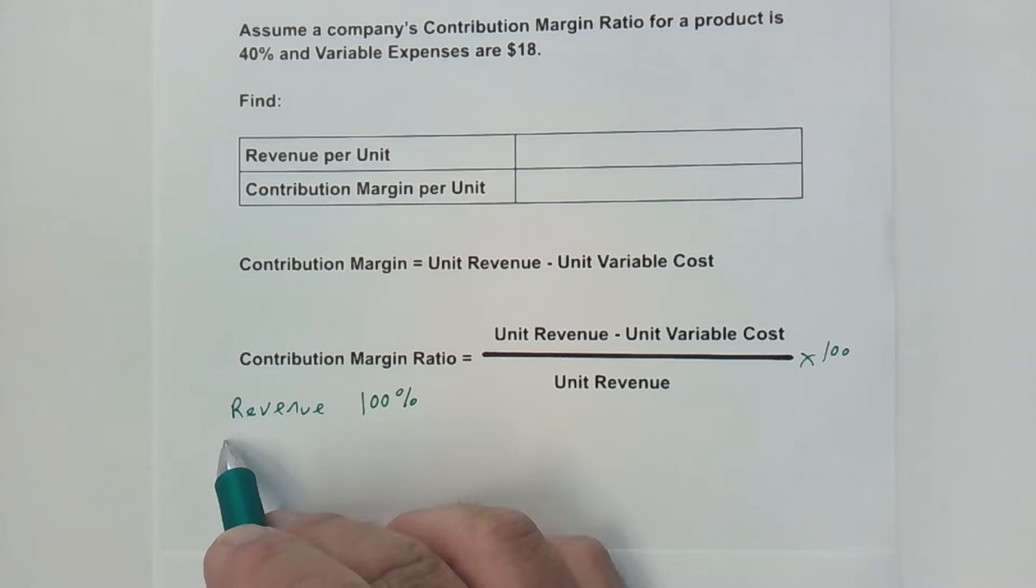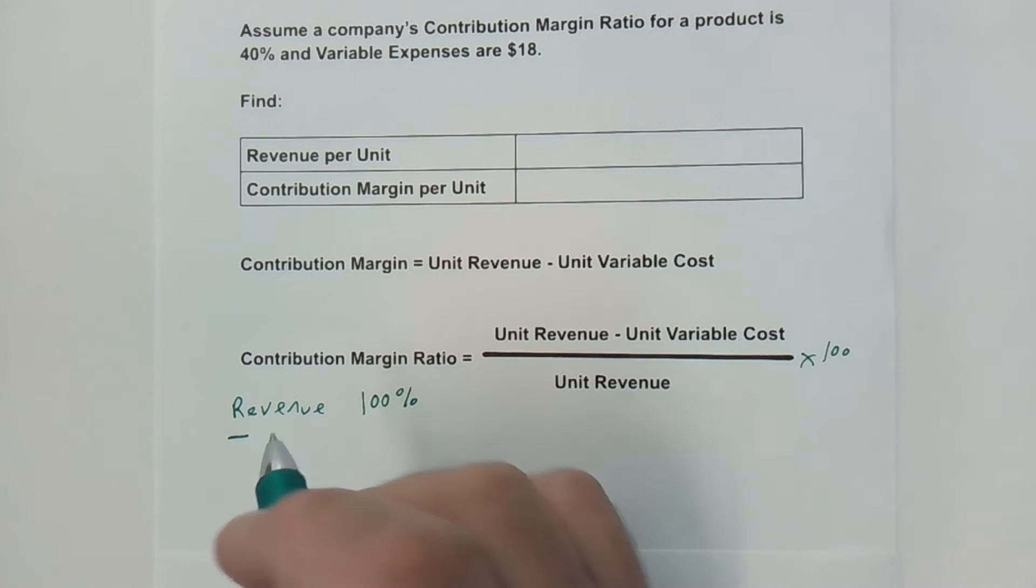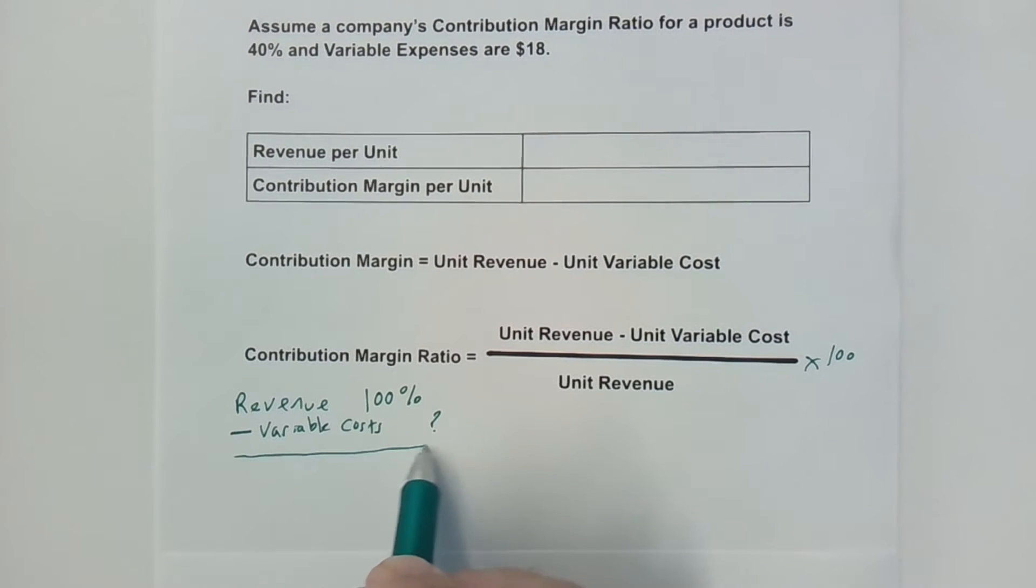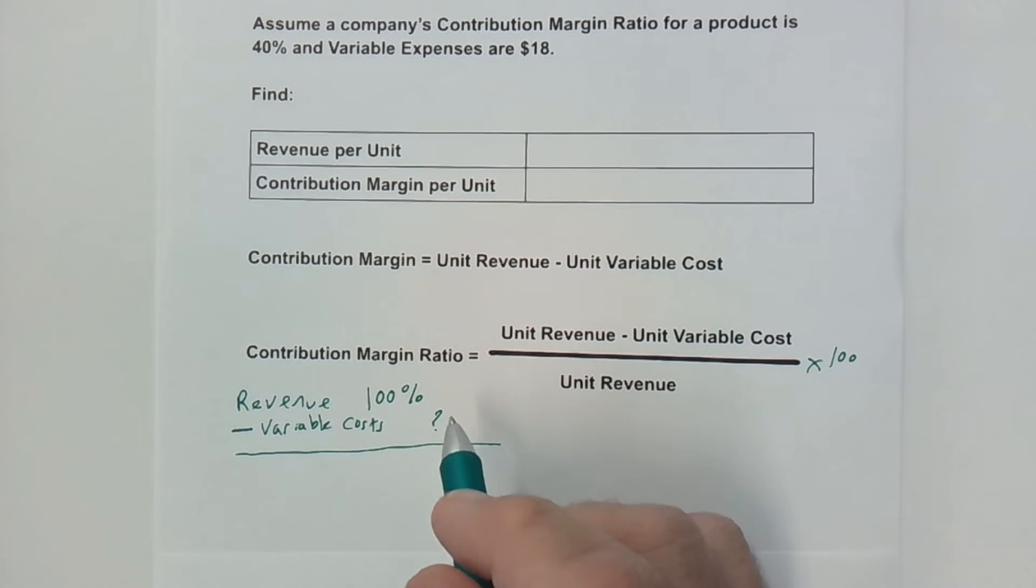The thing that we do take out next would be variable costs. We don't know what that is as a percentage, so I'm going to put that as a question mark. We certainly don't know. All we know is the dollar figure.